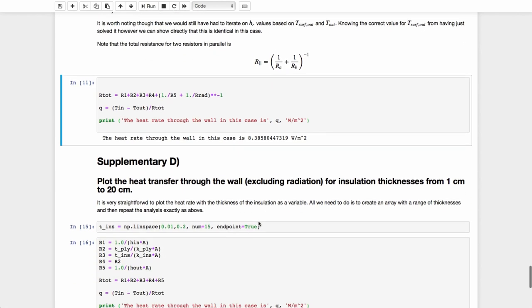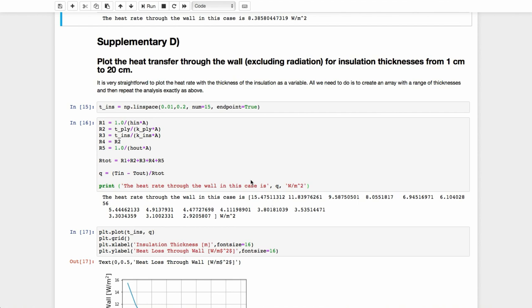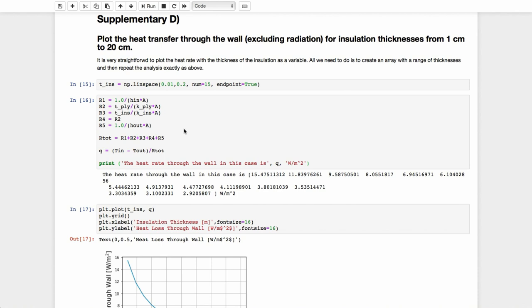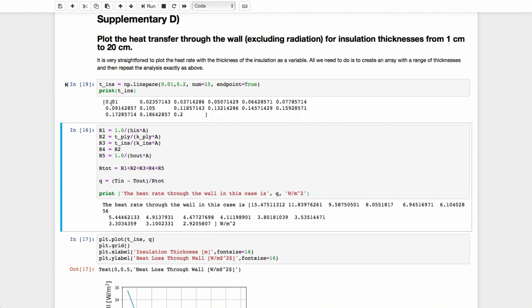And finally, my supplementary D was to plot the heat transfer through the wall excluding radiation for insulation thicknesses from 1 centimeter to 20 centimeters. So for this, I'll simply do exactly as I did for part A of the question except that I'm going to create a vector for the thickness of the insulation and I will let that insulation vary from 0.01 meters or 1 centimeter to 0.2 and this function here is simply making a vector that goes from these two numbers. I tell it endpoint equals true to make sure that I have a point at 20 centimeters and I'm asking for 15 points in that vector. So if I were to look at this variable, you can see that what this is doing. I'll just quickly print that out for you so you can see it. Print t_ints and you can see that that is giving me exactly as we wished a vector that goes from 1 centimeter to 20 centimeters and there are 15 entries in there.